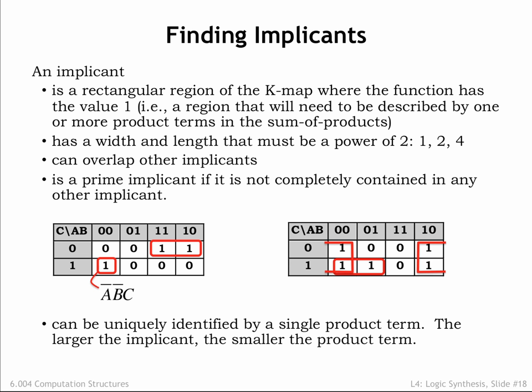How about the 1x2 implicant in the upper right-hand corner? We don't want to include the input variables that change as we move around in the implicant. In this case, the two input values that remain constant are C, which has the value 0, and A, which has the value 1, so the corresponding product term is A and NOT-C.